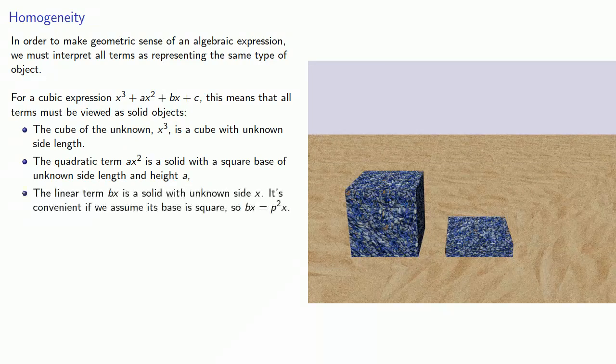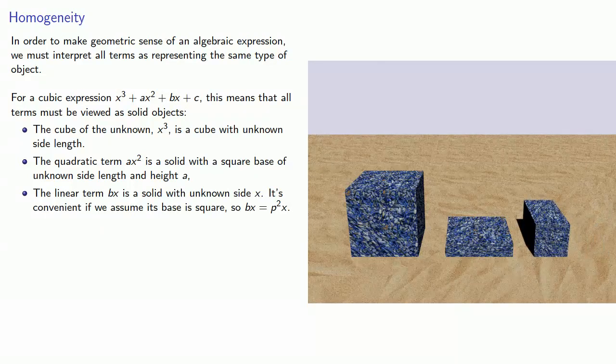The linear term bx has to be a solid with unknown side x, and it's convenient if we assume its base is square, so bx is really p²x.